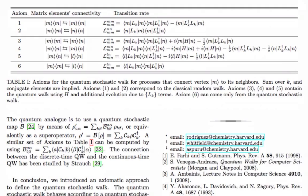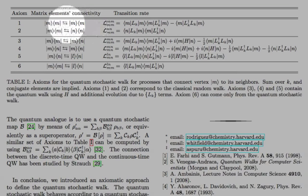We show in the paper how rules number one and two correspond to incoherent hopping from vertex to vertex, how they reduce to exactly the classical random walk.